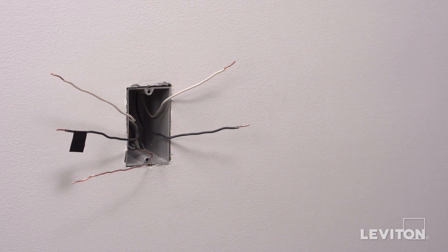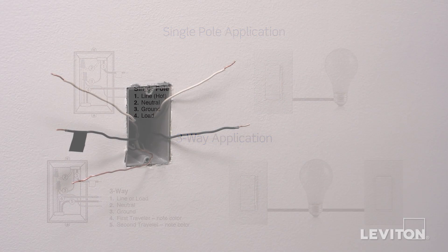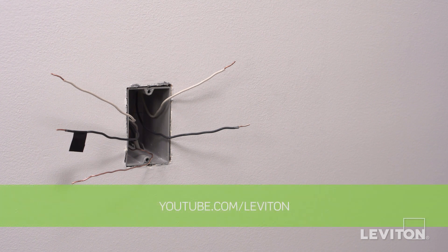Identify whether the wiring application is single-pole or a three-way application. If the wiring in the wall box does not resemble either of these configurations, consult an electrician. We will proceed with a single-pole application. Visit youtube.com/leviton to view a three-way installation video, including how to wire the coordinating remote.